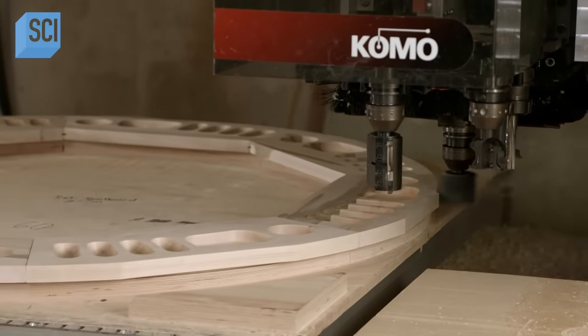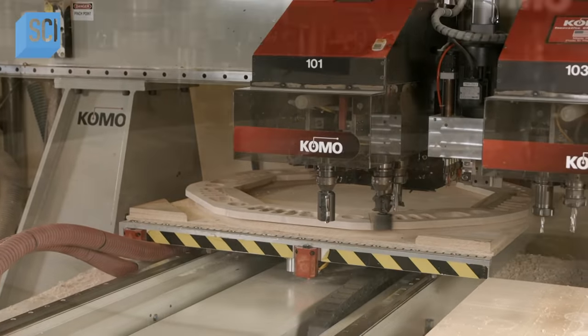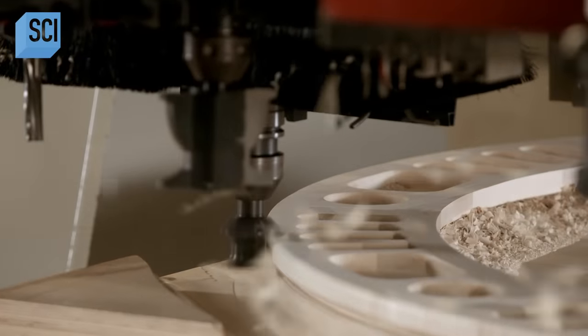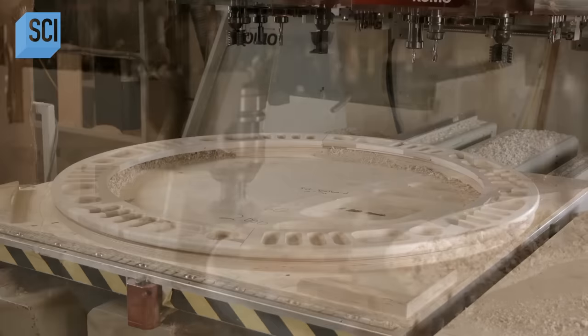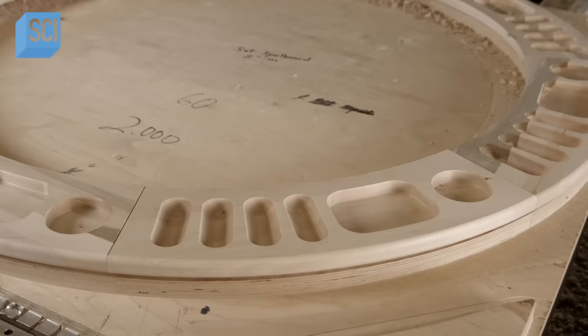The next day, a computerized router rounds the outside of the rim. It also trims the inside of the rim and forms a channel for the insertion of the center of the game table. The game table rim is now complete.